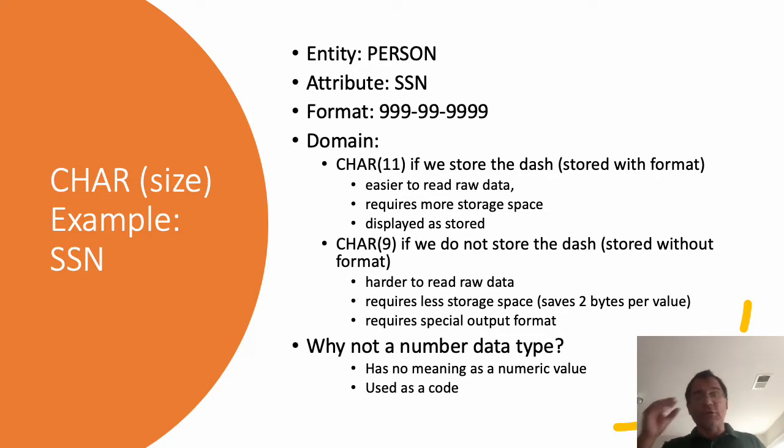Now if we store a lot of social security numbers and we don't want to lose any storage space, we can save these two bytes by just keeping the digits. So we can save it as char of 9 because we have only nine digits that are significant. And this will be storage without format. Now this will make it harder to read when we look at a number, and also when we want to print them in a report or somewhere, we'll need to have a special output format for them.